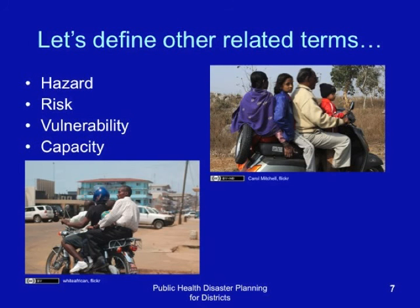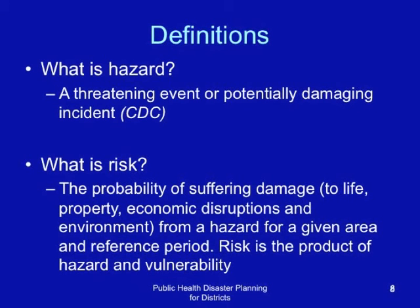Let us look at other terms: hazard, risk, vulnerability and capacity. What is a hazard? A hazard is a threatening event or potentially damaging incident. It hasn't yet occurred, but it is a potential source of a disaster. What is risk? It is the probability of suffering damage to life, property, or economic disruptions from a hazard for a given area and reference period. Risk is a term usually used in probability.